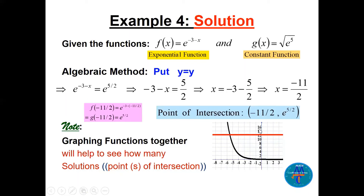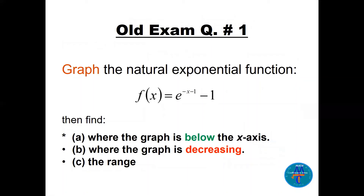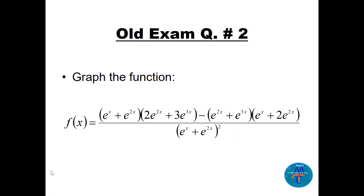The graph shows the exponential e^(−3−x) — which can be drawn with shifting and reflection — intersecting the constant function √(e^5) at x = −11/2. For practice, here are some questions: graph f(x) = e^(−x−1) − 1 and identify where it's below the x-axis, where it's decreasing, and find the range. Then graph the larger function involving e^x + e^(2x) with multiplications and a squared denominator — think about simplifying first.